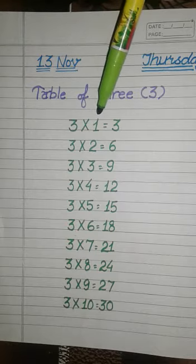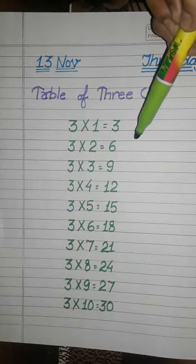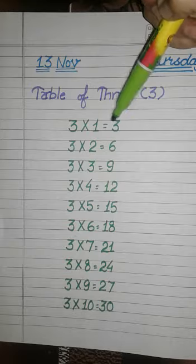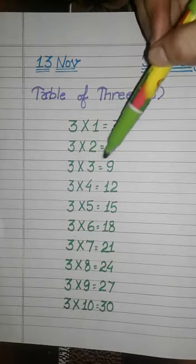Then, let's start writing. So, you have to write. 3×1 is 3. 3×2 is 6. 3×3 is 9.